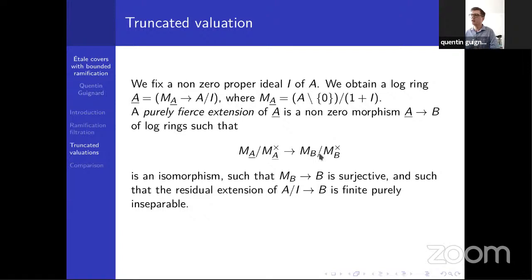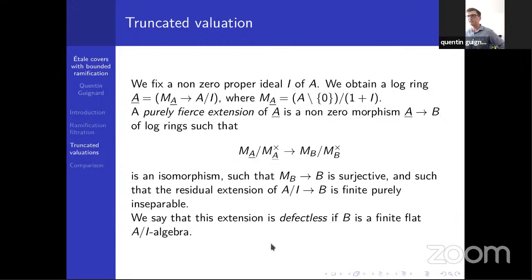It's also a very particular log structure because this homomorphism of monoids is surjective, which means that our monoid is basically as big as it gets. It's very large. Now we consider so-called purely fierce extensions of this underlying A, which is now some kind of residue logarithmic ring. It's a non-zero morphism to some logarithmic ring B such that in terms of value groups, the monoid mod invertible elements gives an isomorphism - gamma_A equals gamma_B, but of course B is not a valuation ring here, so it makes sense to speak of gamma_B.